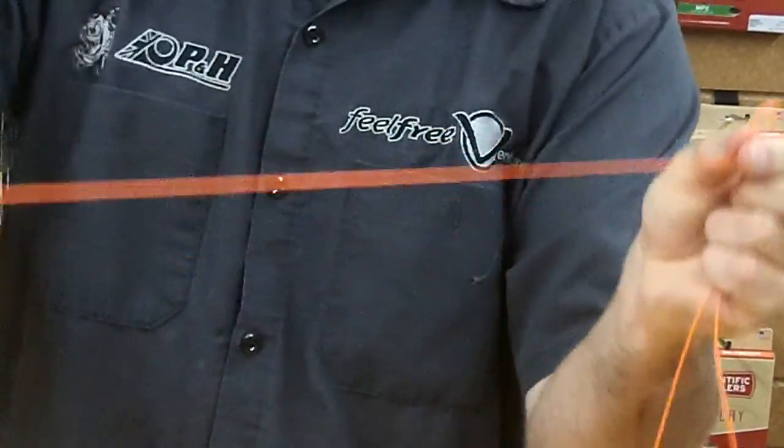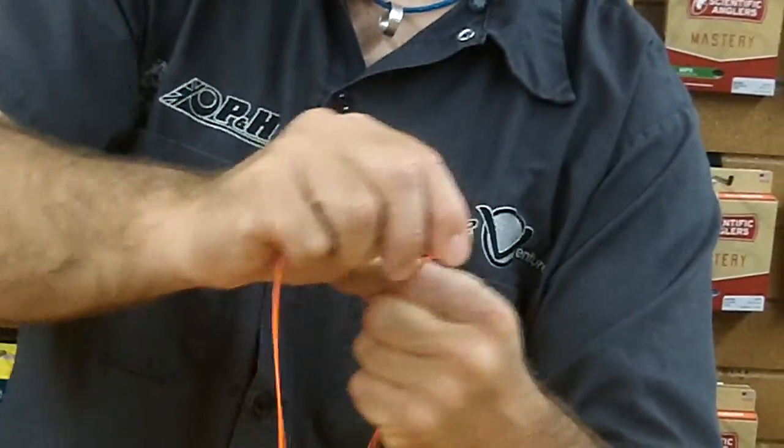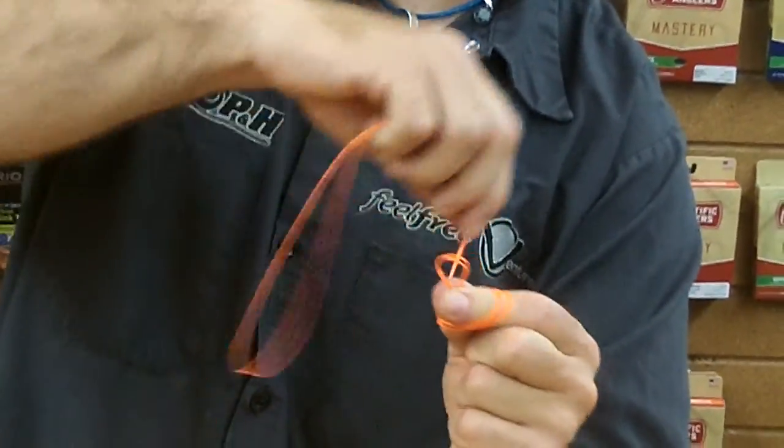And then you're going to take the long tag end that you've left by doing so and wrap it on your fingers and wrap it evenly spaced forward five times.